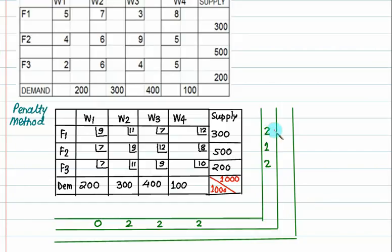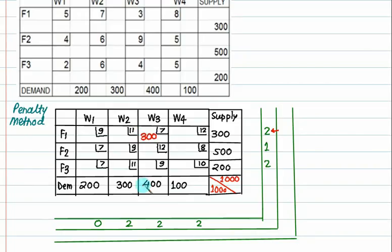We will find the lowest cost in the highest penalty row or column. There are ties with penalty 2. Checking: lowest costs are 9, 7, 7. We select 7 — this is arbitrarily chosen. We allocate the maximum available, which is 300. The demand is 400, so we supply 300, this row is cancelled, and 100 is left.